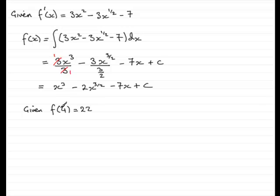So, essentially, when x is 4, we get 22. And so, we can pass that into this, so we can say that 22 equals, and we just substitute 4 through here. So, we're going to have 4 cubed minus 2 times 4 to the power 3 over 2 minus 7 times 4 plus c.